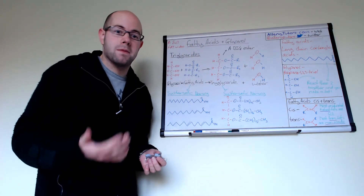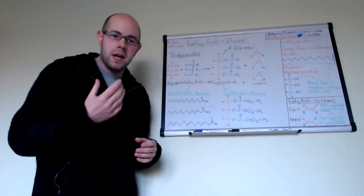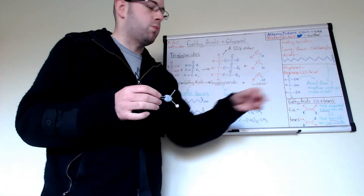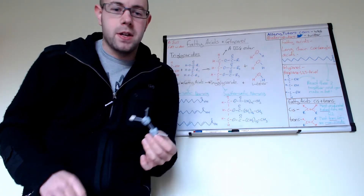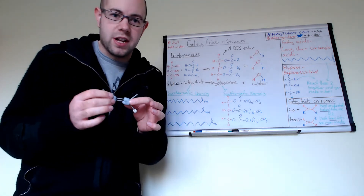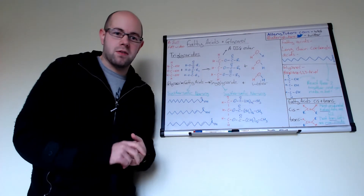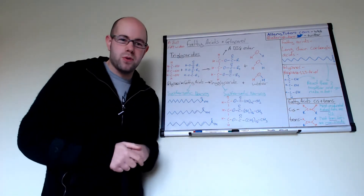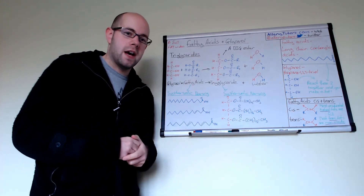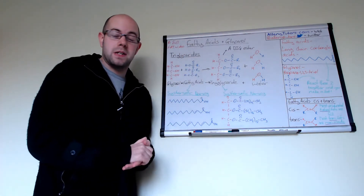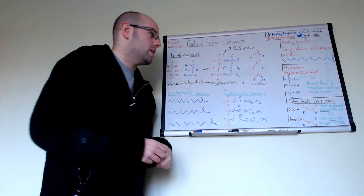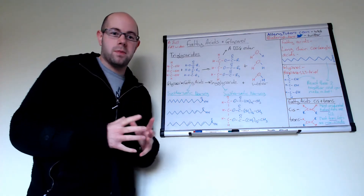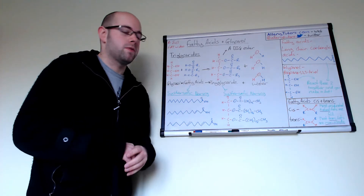Trans fats are generally man-made — they're made synthetically and put into cakes and biscuits. Your cis fat, where both R groups are on the same side, is how most natural fats with a double bond are actually formed. Fats with a double bond are described as unsaturated fats, which are actually quite healthy for you. Whereas your trans fats have actually been proven by some research to be unhealthy. Basically, you get two types of fats: a saturated fat with no double bonds, and an unsaturated fat with double bonds — and generally, the more double bonds you have, the healthier the fat is.